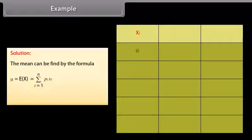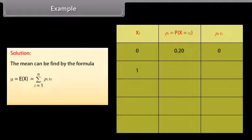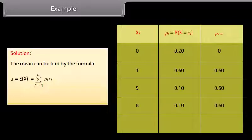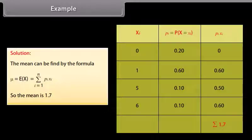Example: Find the mean for a given probability distribution. Solution: Using the formula μ = Σ pi·xi, the sum of all pi·xi values gives a summation of 1.7. So the mean is 1.7.